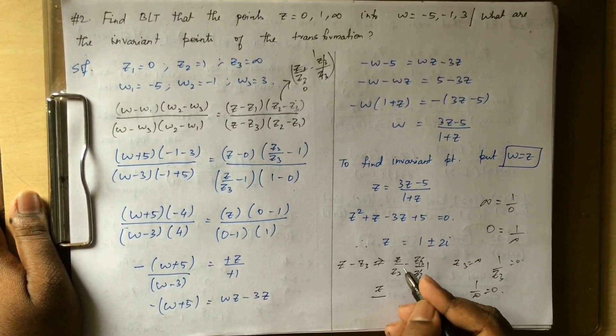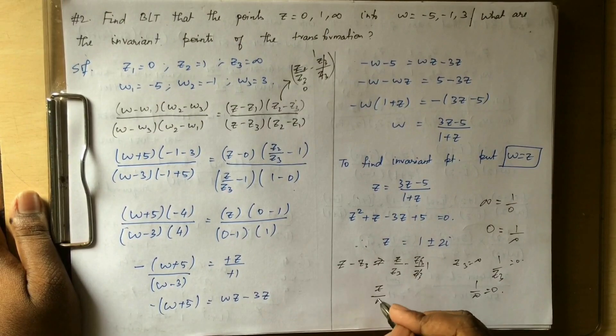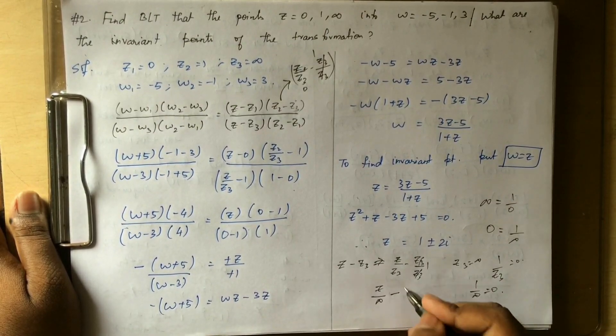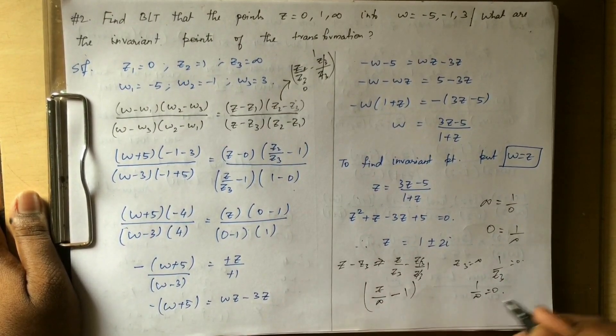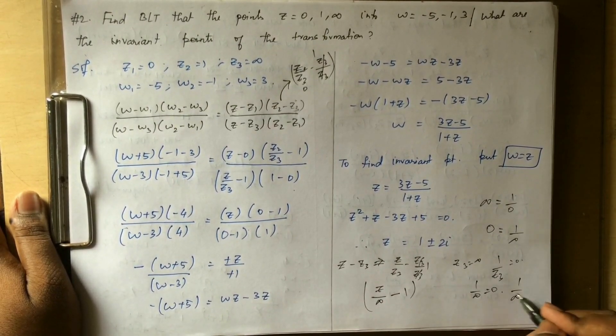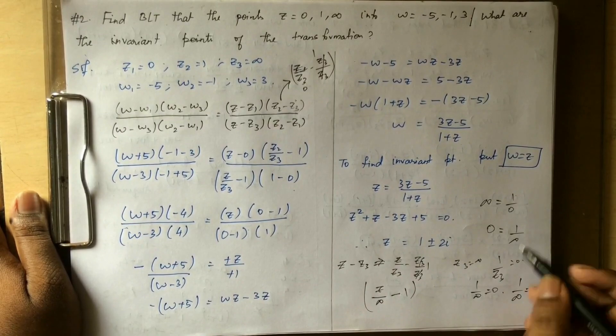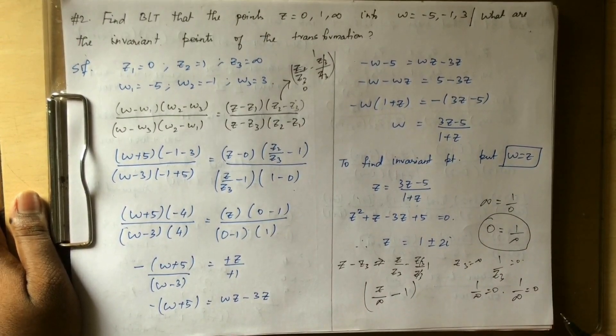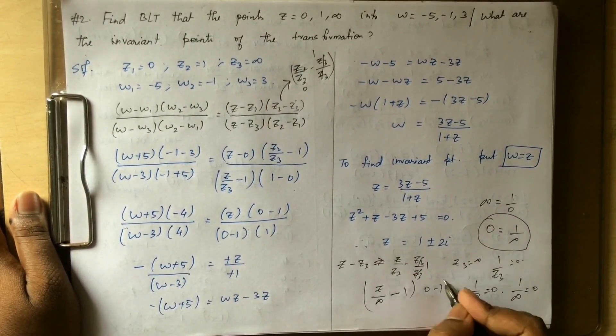The term z divided by infinity will be 0, and anything divided by infinity is 0. So we get 0 minus 1, simplifying the expression.